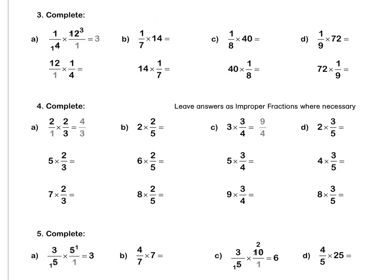Let's look at B together. A seventh times 14 — we can put the 14 over 1. Then we simplify in our question, dividing by 7 to get 1 and 2. We multiply out to get 2 over 1, or simply 2 wholes. Use this method to complete question 3 by yourself.